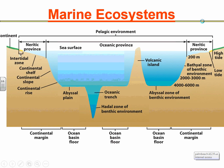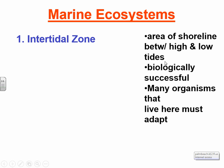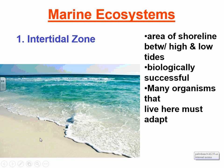The intertidal zone is the area between high and low tide. The ones we're familiar with here in Florida are sandy, beachy intertidal zones. When we have sandy intertidal zones, the organisms that survive here have adaptations such as burrowing down into the sand — for example, different types of crabs — so they're not taken away with the tides or waves.